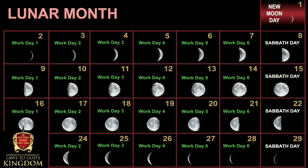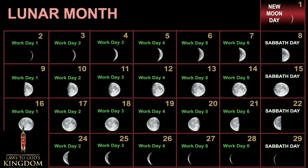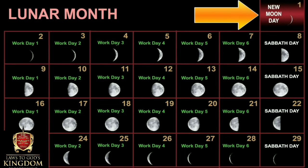If today is a New Moon Day and today is Tuesday, the next four Tuesdays will be the Sabbath. Seven days from today the moon will be 50% full — half moon. Seven days after that, 100% full moon. Seven days after that, 50% full — last quarter. Seven days after that, very tiny — the last crescent of the moon. The day after that is automatically a New Moon Day.